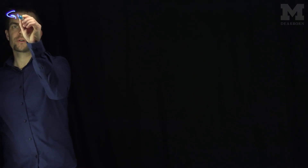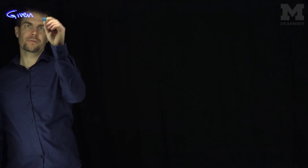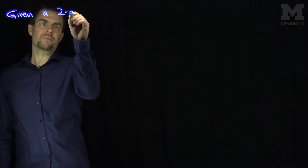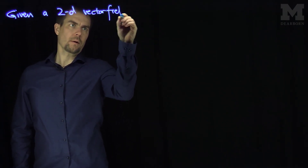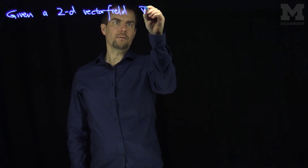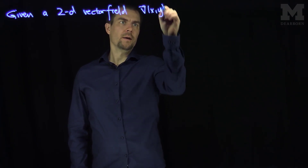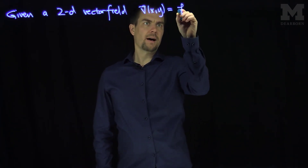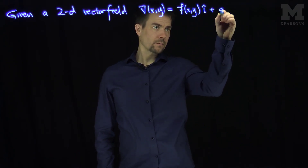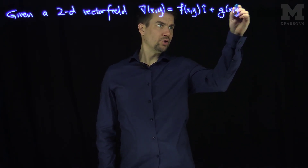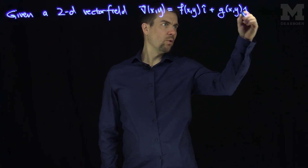Hello students, in this video we'll discuss streamlines of a vector field. We'll focus on two-dimensional vector fields, though there's a similar result for three-dimensional ones. Given a 2D vector field V of x, y, it outputs f of x, y in the i-direction and g of x, y in the j-direction.